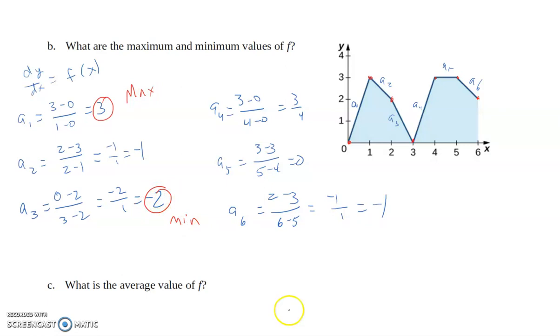And then the last question says, what is the average value of f? Well, remember that the average value is going to be given by, we're going from 0 to 6, it's 1 over 6 minus 0 times the integral from 0 to 6 of f(t)dt. But this function is piecewise constant, so this works out to be 1/6...